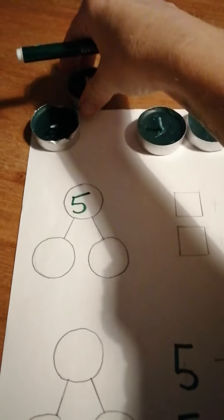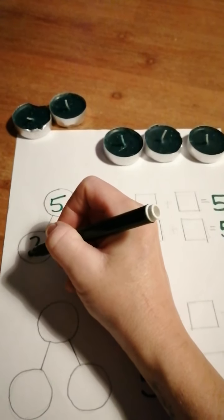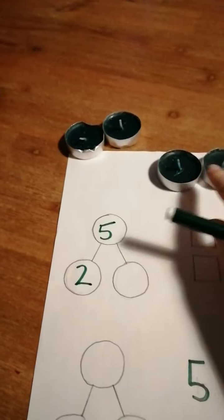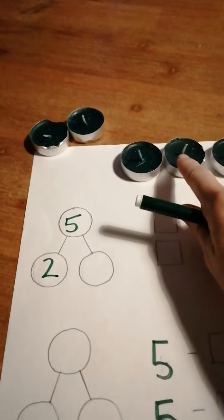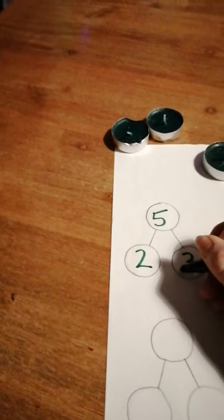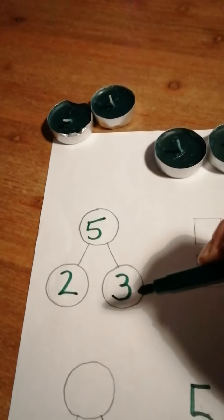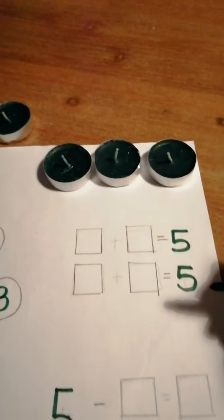Then we need to think about parting the number five. So if I was to take two away, let's put two in the first part. How many do I have left? One, two, three. So now I've finished my part, part, whole.